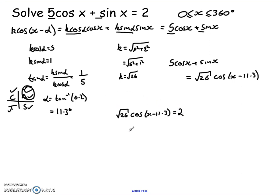Now this we should be able to solve. Divide through by the root 26 and I get cos of x minus 11.3 equals 2 over root 26. Take cos minus 1 of both sides and I get x minus 11.3 equals cos minus 1 of the 2 over root 26 which is 66.9 degrees.